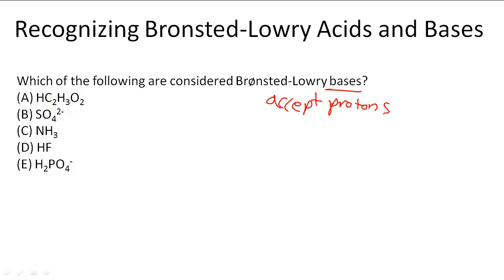When we look at this, A is actually going to be able to split up and become H+, and then we're going to have C2H3O2-. So it's going to donate. So A is an acid and we don't want acids, we're looking for bases.